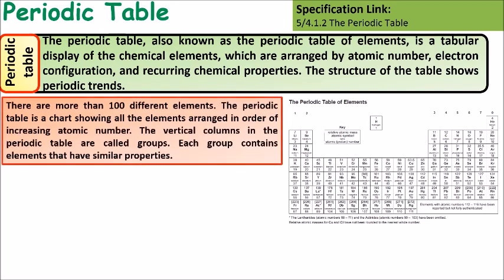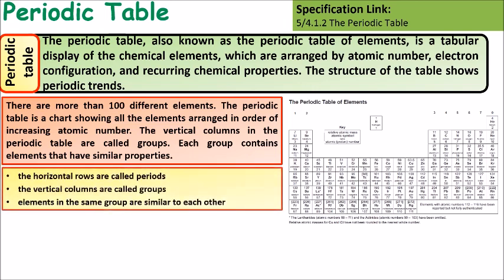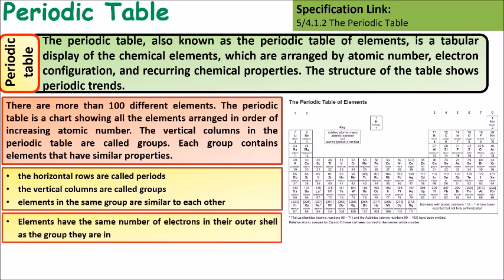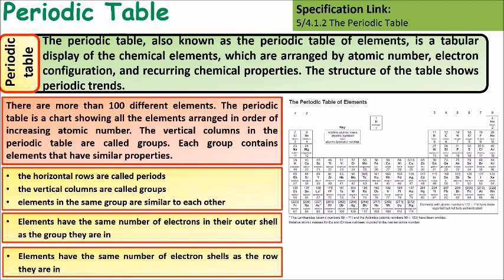There are more than a hundred different elements in the periodic table. Each group contains elements with the same number of electrons in the outer shell and each period shows how many shells of electrons that particular element has. The horizontal rows are called periods, the vertical columns are called groups. Elements in the same group all have similar chemical properties. Elements have the same number of electrons in their outer shell as the group number, and the same number of electron shells as the row they are in.